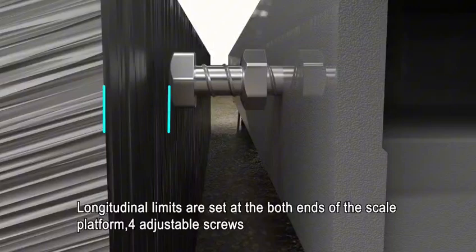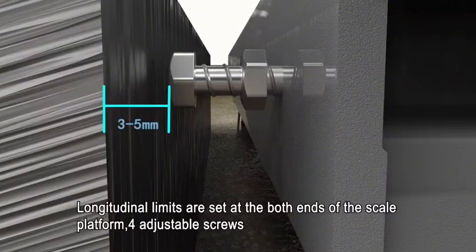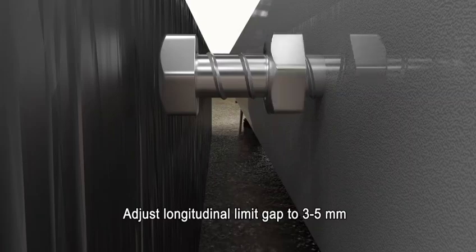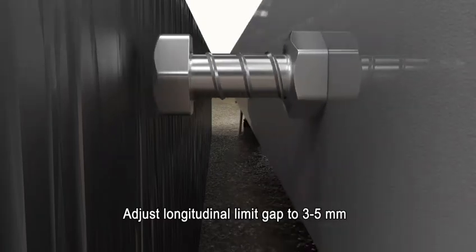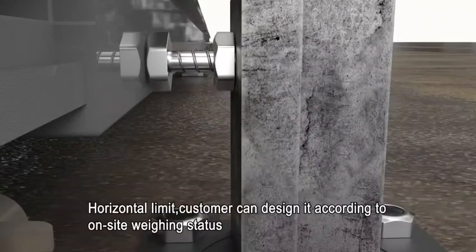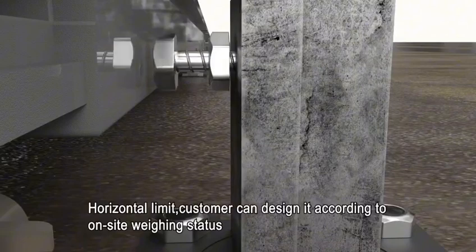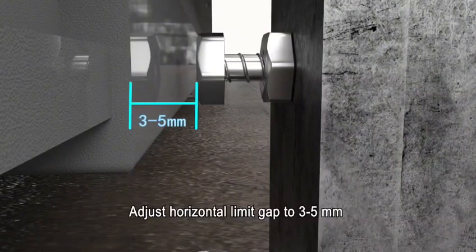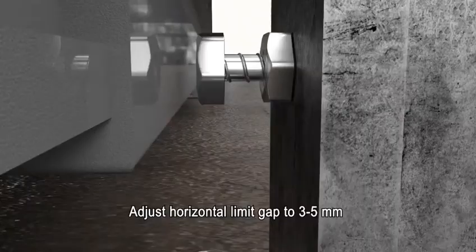Longitudinal limits are set at both ends of the scale platform with 4 adjustable screws. Adjust longitudinal limit gap to 3-5mm. Horizontal limit can be designed according to onsite weighing status. Adjust horizontal limit gap to 3-5mm.